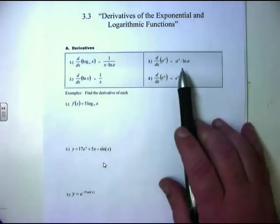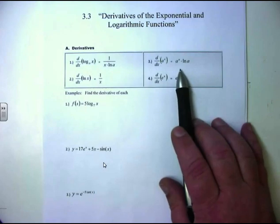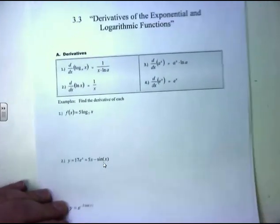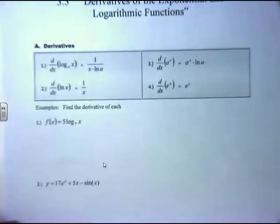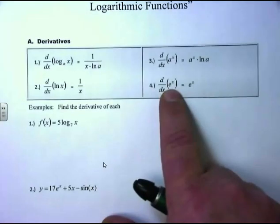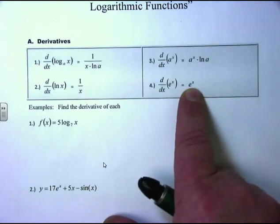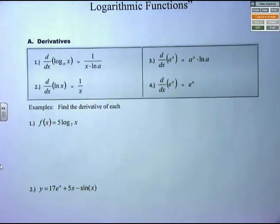We also have our exponential forms. The most important exponential form is the derivative of e to the x. The derivative of e to the x is e to the x. It is the only function in the universe that has its own derivative, besides 0. The derivative of 0 is 0, of course. But the derivative of e to the x is e to the x.